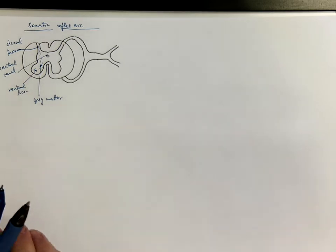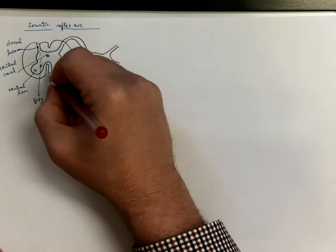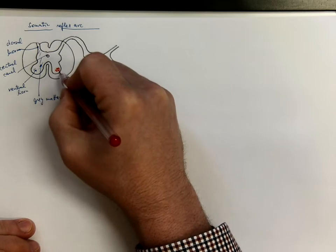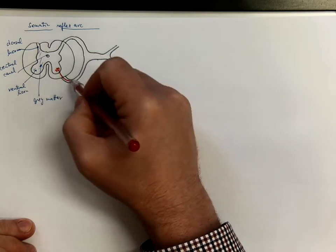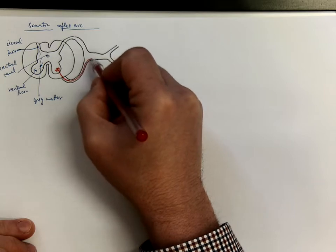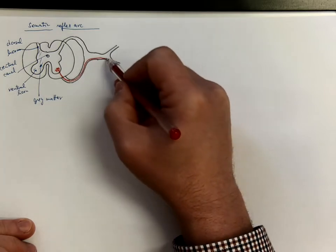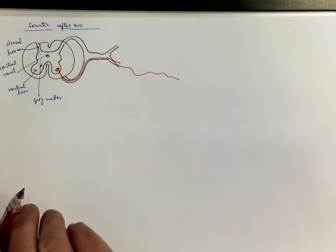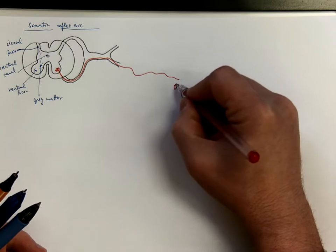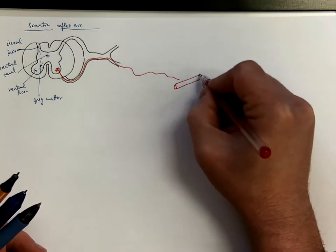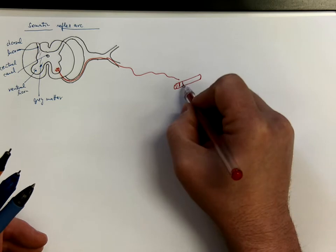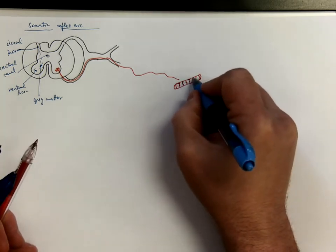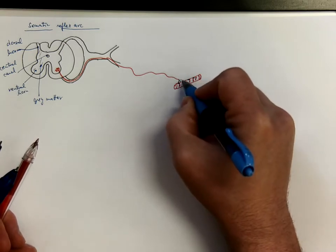Let's start with the motor neurons that are sitting in the ventral horns, and their axons are running through the ventral roots of the spinal nerve and then to some muscle fiber or groups of muscle fibers — striated muscle fibers. And here it ends with the motor end plate.